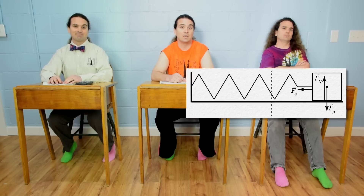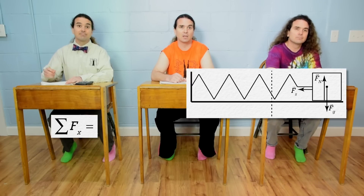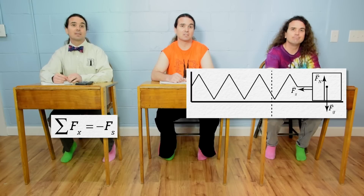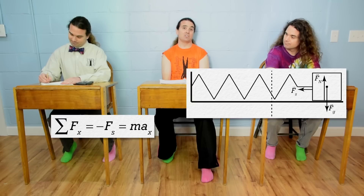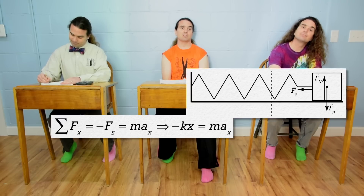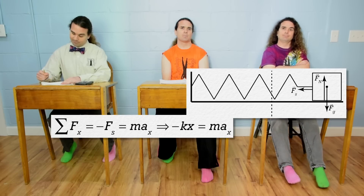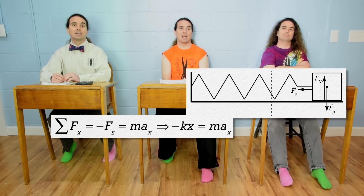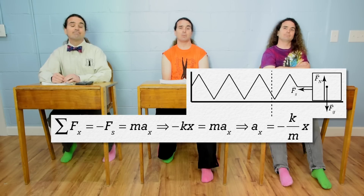Sure. The net force in the x direction equals the force of the spring, which is negative because it is to the left, which equals mass times acceleration in the x direction. The magnitude of the equation for the force of a spring is the spring constant times the displacement from equilibrium position, or k times x, divided by mass. And we have the acceleration in the x direction equals the negative of the spring constant divided by the mass, all multiplied by x.